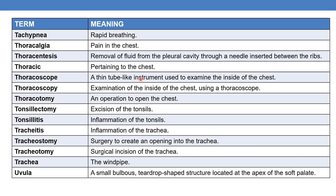Thoracic means pertaining to chest. Thoracoscope is a thin tube-like instrument used to examine inside of the chest. Thoracoscopy is the examination of the inside of the chest using a thoracoscope. Thoracotomy — where -otomy means incision — is an operation to open the chest or make an incision. -Ostomy means surgical artificial opening.